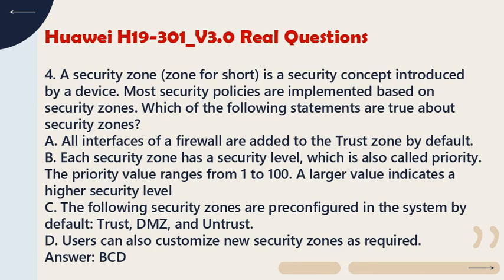Question 4: A security zone (zone for short) is a security concept introduced by a device. Most security policies are implemented based on security zones. Which of the following statements are true about security zones? A. All interfaces of a firewall are added to the trust zone by default. B. Each security zone has a security level (also called priority); the priority value ranges from 1 to 100, and a larger value indicates a higher security level. C. The following security zones are pre-configured in the system by default: Trust, DMZ, and Untrust. D. Users can also customize new security zones as required. Answer: B, C, D.